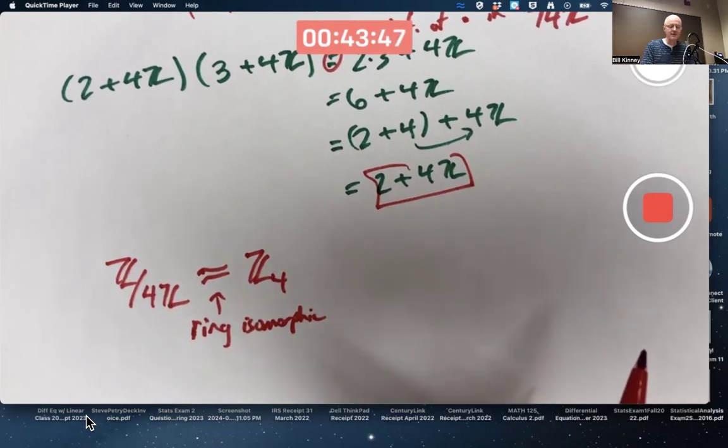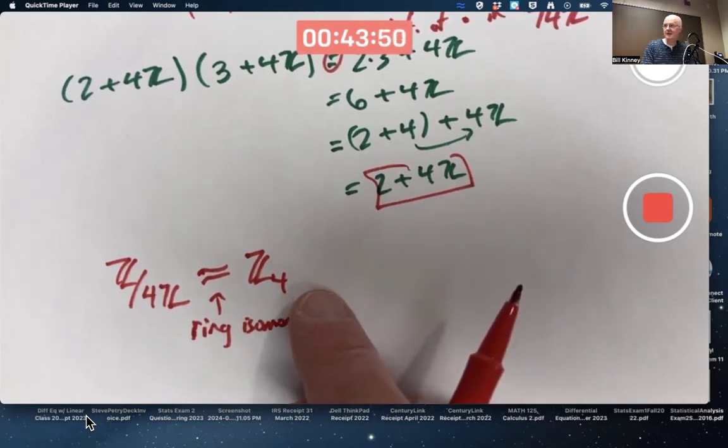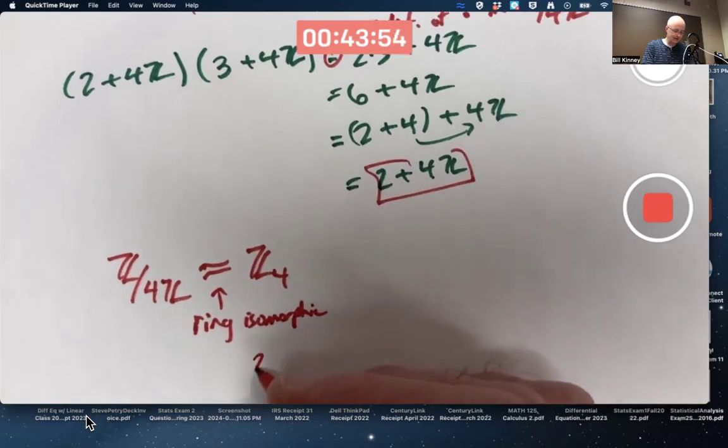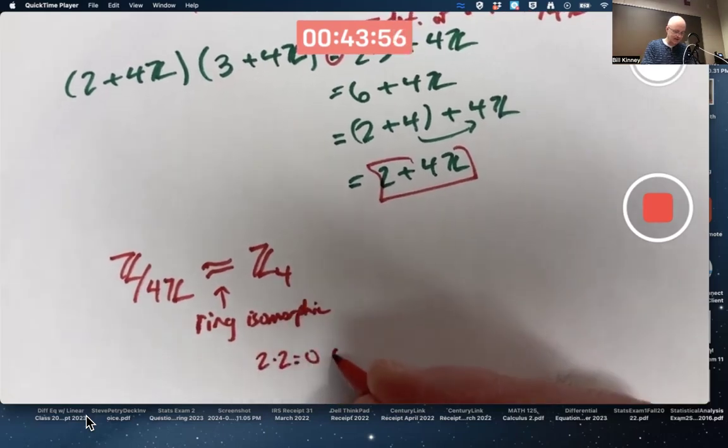4 is not prime. Z₄ is not an integral domain because 4 is not prime. In particular, for example, 2 times 2 is 0 in Z₄.